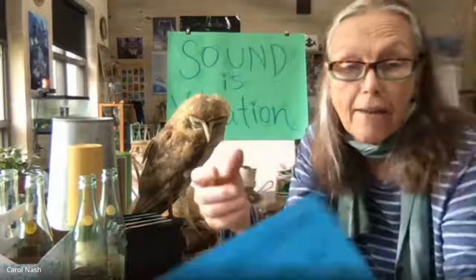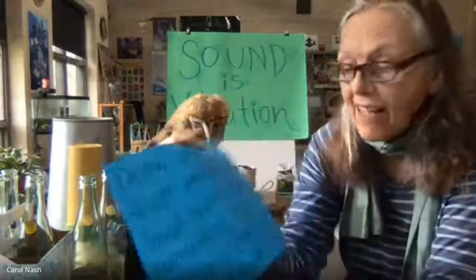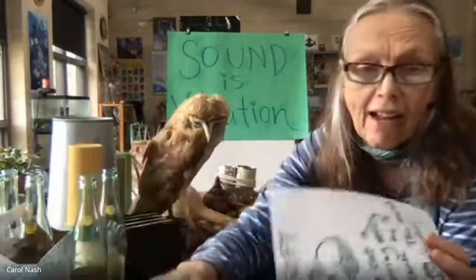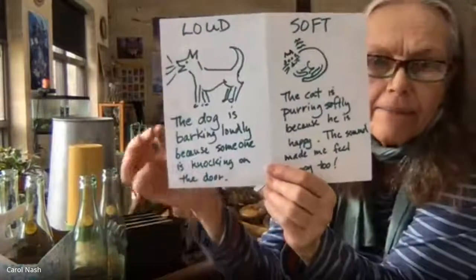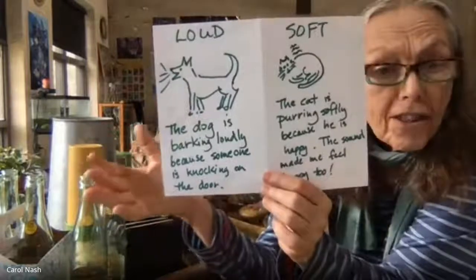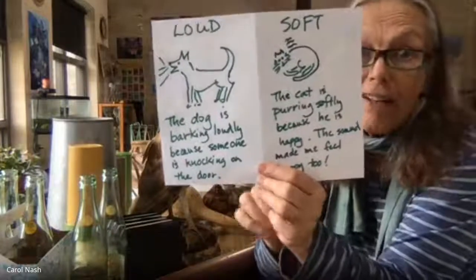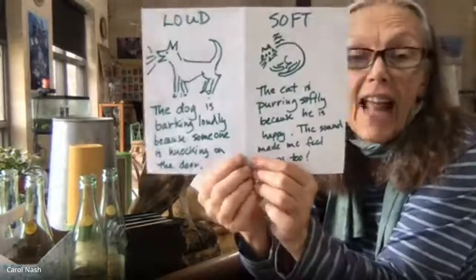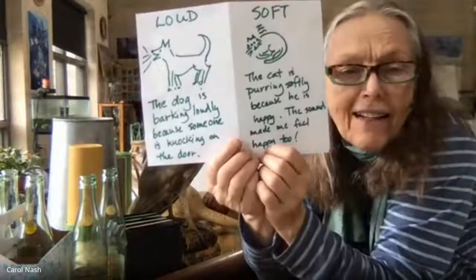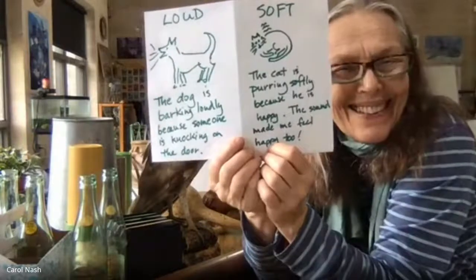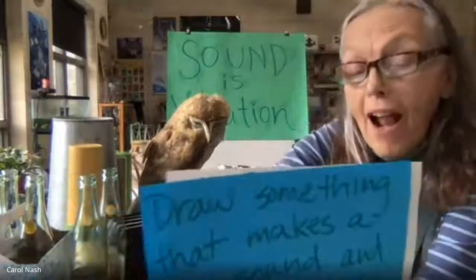Animals use sound for communication. Think about going around your house or neighborhood and finding something that makes a loud sound and something that makes a soft sound — and think about why they're making it. In my house my dog was barking loudly because someone was knocking at the door, telling me 'someone's here.' The cat is purring softly because he's happy, and when I hear that sound it makes me happy too. Animals make all kinds of different sounds for different reasons.